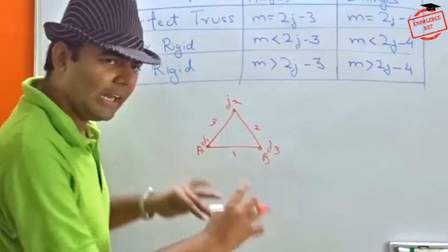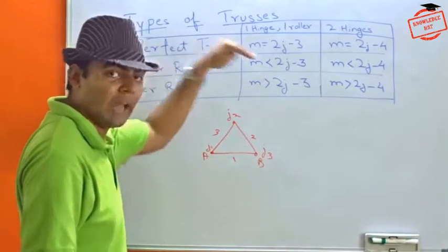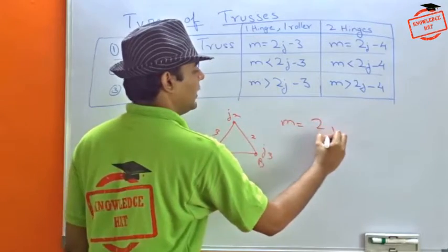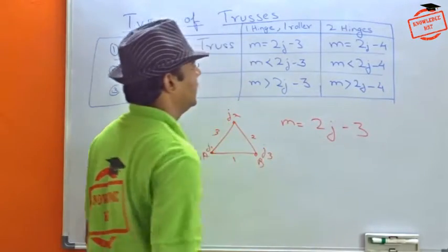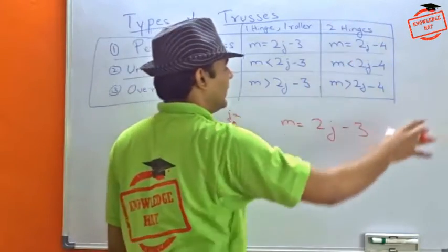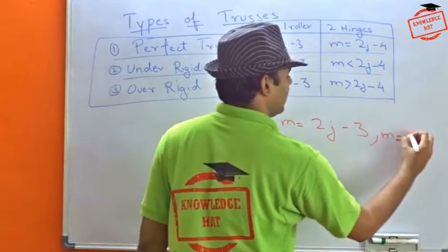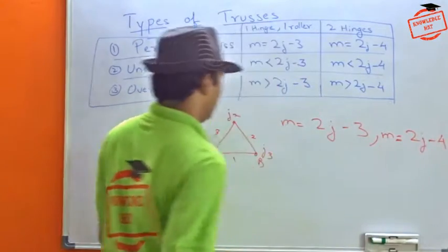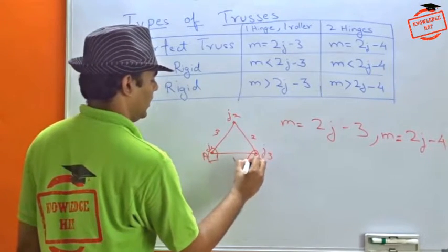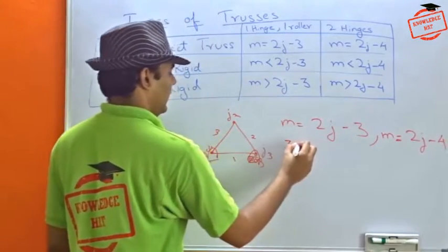Now to calculate whether a system is under-rigid or over-rigid, or it is a perfectly balanced rigid truss, we have a formula. So here, if M is equal to twice the number of joints minus three, for one hinge and one roller kind of a system. And if there are two hinges, then M is equal to, or the number of members, M is the number of members, M is equal to twice the number of joints minus four. In this case, if you assume this to be a hinge joint and this to be a roller joint, the number of members is three.